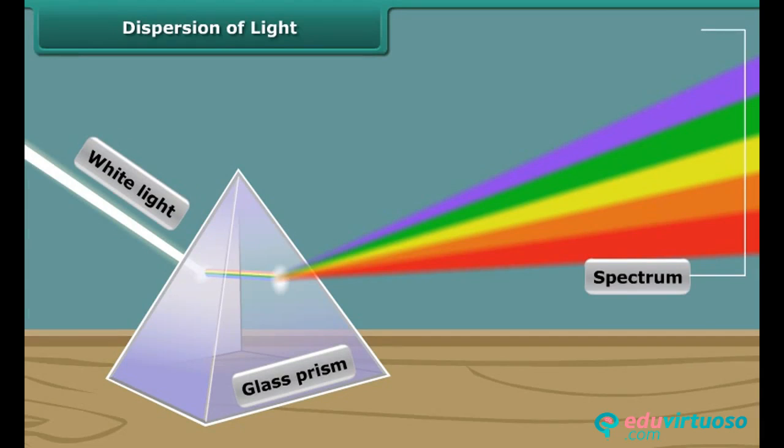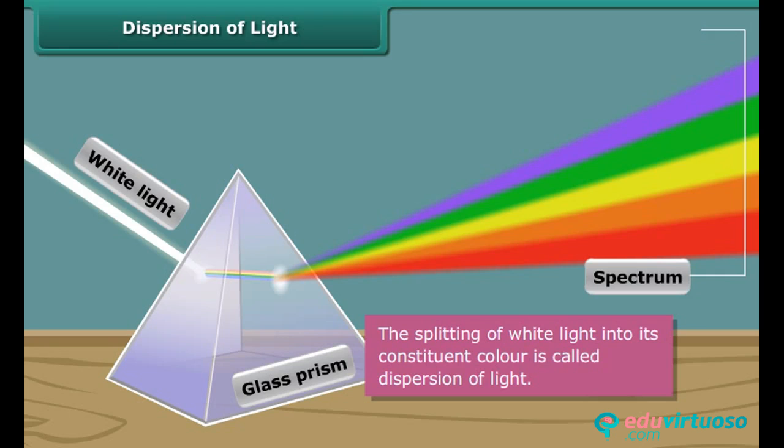It means that the beam of white light has split up into its constituent colors. This group of colors represents the spectrum of white light. Therefore, this phenomenon of splitting of white light into its constituent colors is called the dispersion of light.